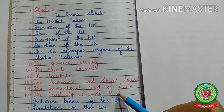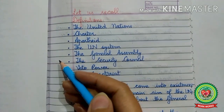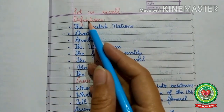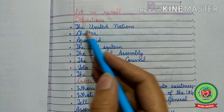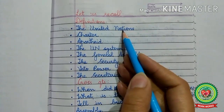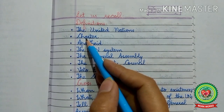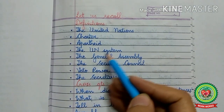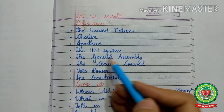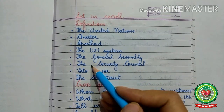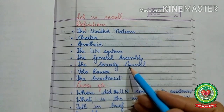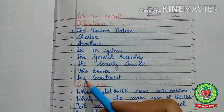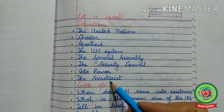But before starting today's topic, let us recall the definitions and cross-question answers related to the previous topic. The definitions to recall are: the United Nations Charter, apartheid, the UN system, the General Assembly, the Security Council, veto power, and the Secretariat.